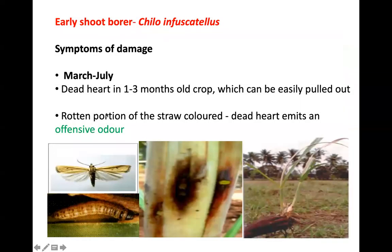Coming to the important pests, we will be discussing them in two parts. The first part covers borers, and the second part deals with sucking insects. Any remaining pests will be discussed in the third part — other pests like root pests and other soil pests. Coming to the first pest: early shoot borer, that is Chilo infuscatellus.